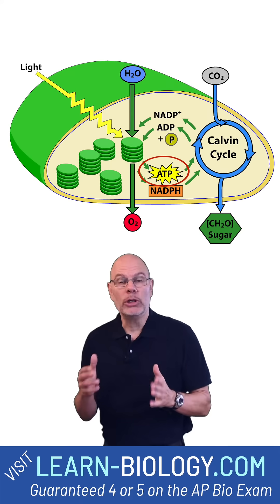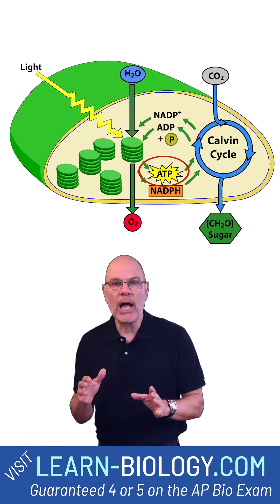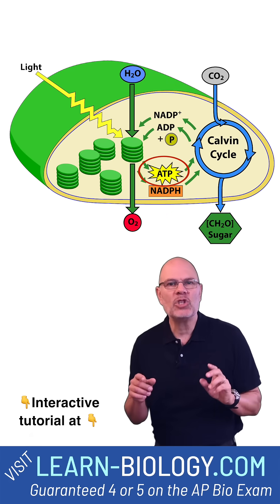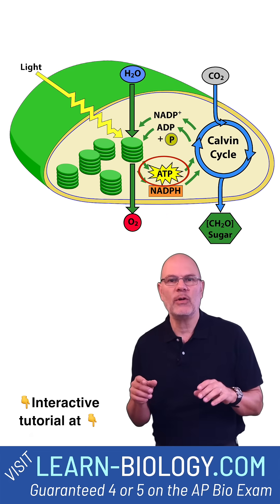The ATP plays the role it always does. It drives an endergonic or energy-requiring process. In this case, it's driving forward the second phase of photosynthesis, the Calvin cycle.